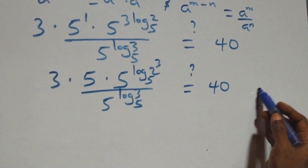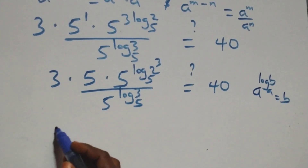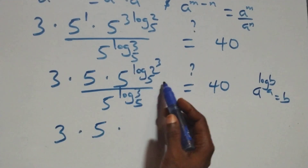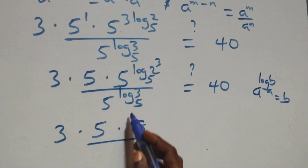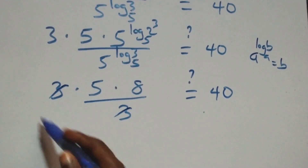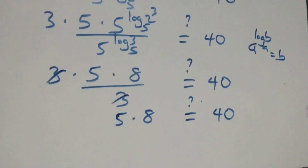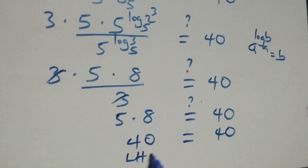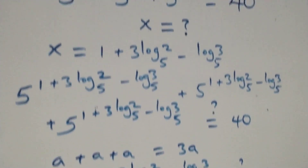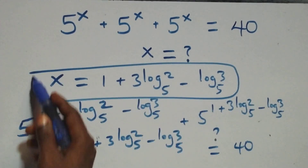Using the identity a raised to power log base a of b equals b, we get 3 times 5 times 2³ over 3. 2³ equals 8, so this is 3 times 5 times 8 over 3. The 3s cancel, giving 5 times 8 equals 40. Left-hand side equals right-hand side. We conclude that x equals 1 plus 3 log₅2 minus log₅3 satisfies the given problem.